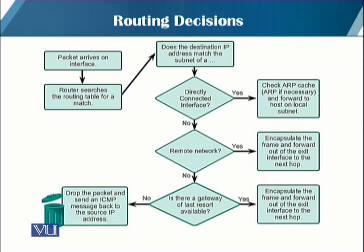If the router does not have a default route, then the packet is discarded and an ICMP error message is generated — an 'unreachable' message sent to the source IP address of the packet that originally generated it. This logic flowchart diagram shows all the steps just explained.